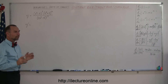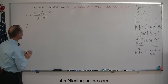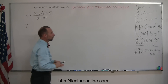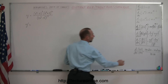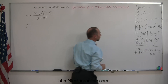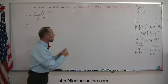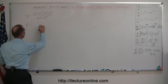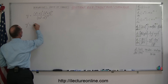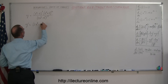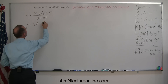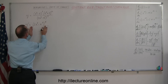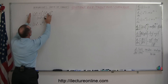Starting out with the quotient rule, that means we're going to take the denominator — the function of the denominator right here — so that would be 2x cubed minus x squared, raised to the fifth power. That's the denominator, times the derivative of the numerator.